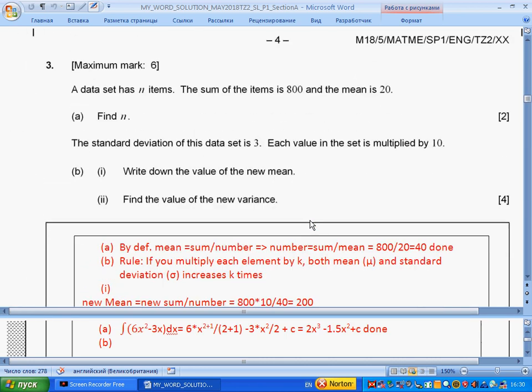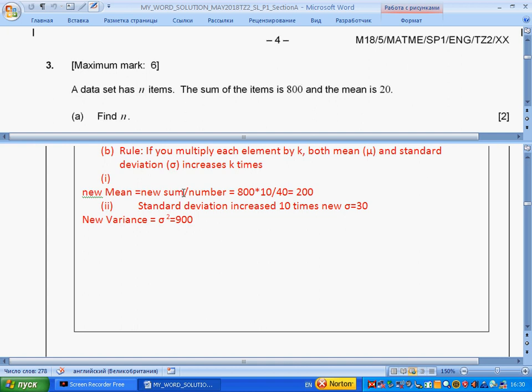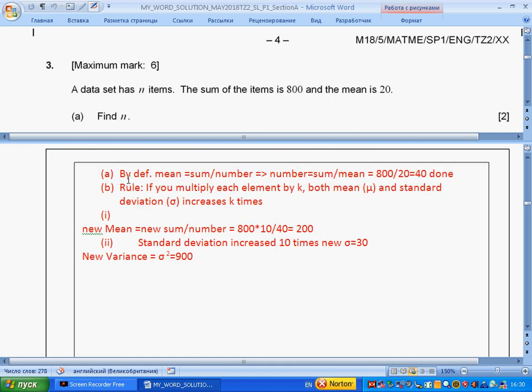Question 3: A data set has n items. The sum of the items is 800 and the mean is 20. Find n. By definition, mean equals sum divided by number. Rearranging for number, we get sum divided by mean, so 800 divided by 20 gives us 40. This question is done.